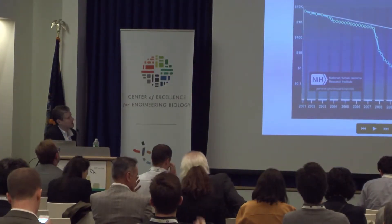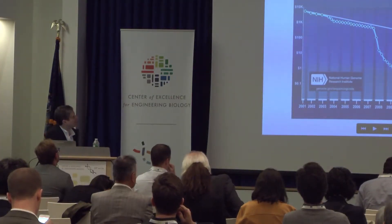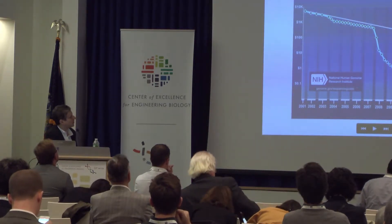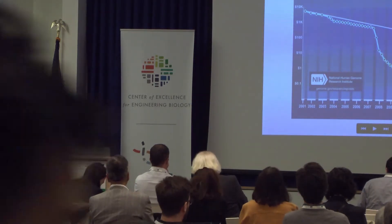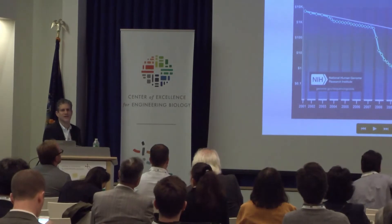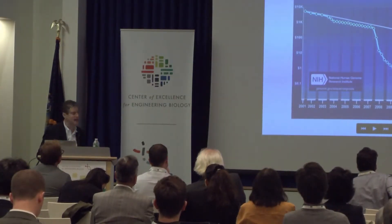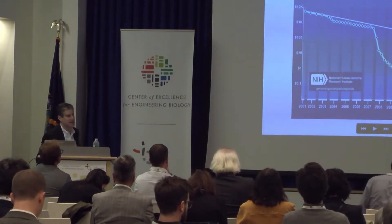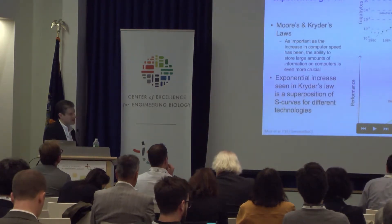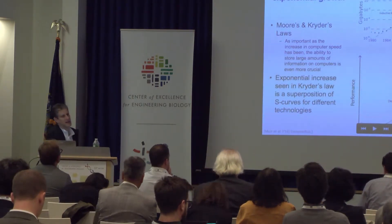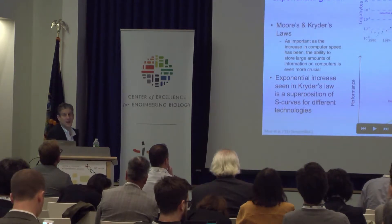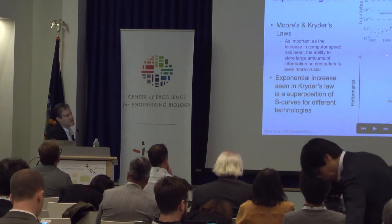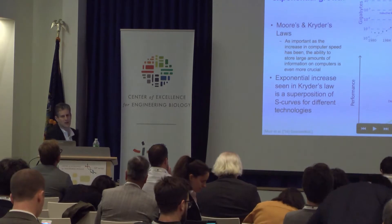Subsequently, we look like we kind of plateaued to some degree, paralleling the Moore's Law line. People spend a lot of time discussing whether the scaling is exponential or not, and how we think about scaling into the future. I'd like to posit that scaling in DNA generation actually follows something called Kryder's Law rather than Moore's Law.